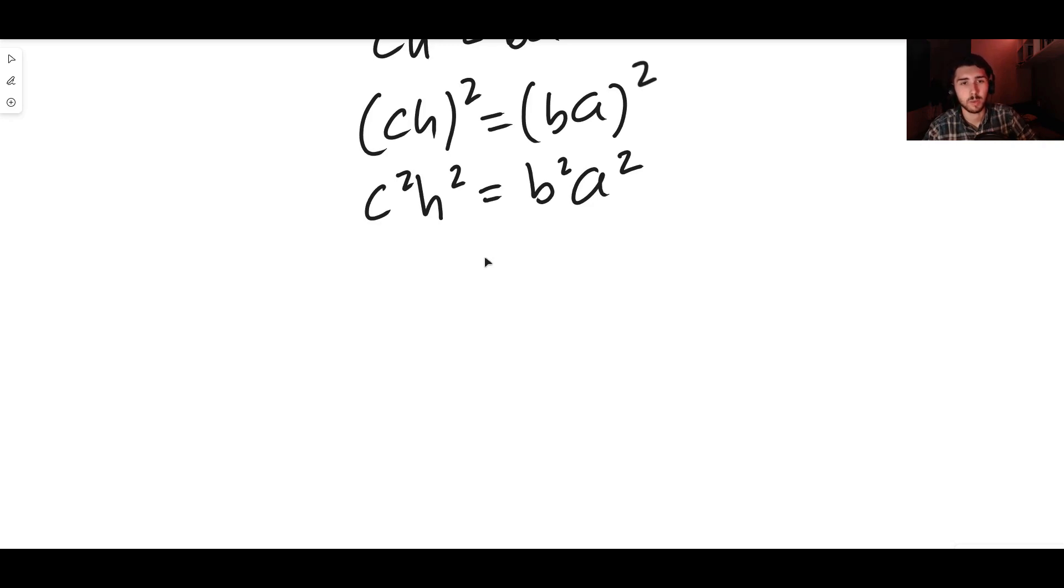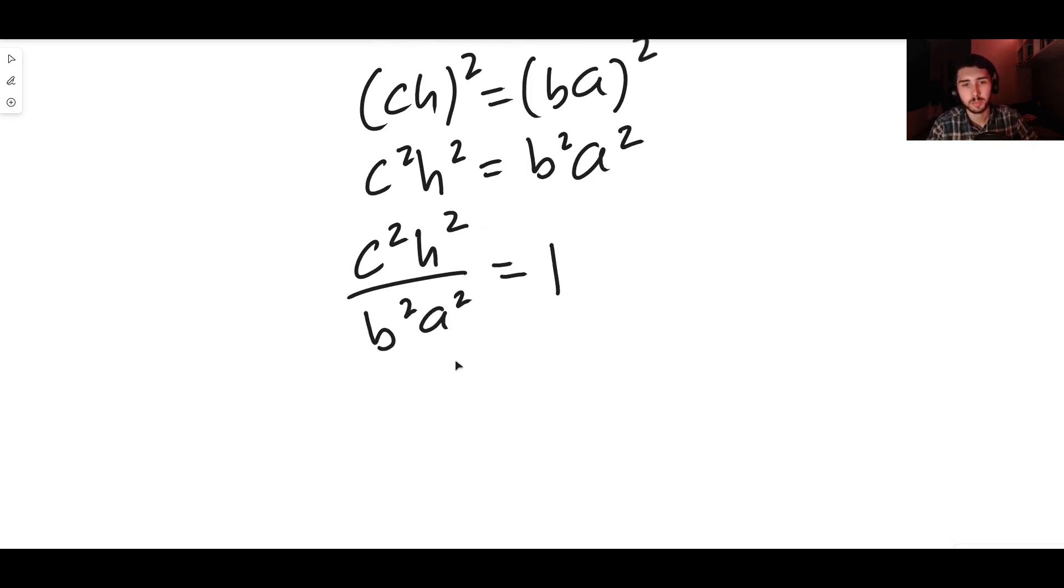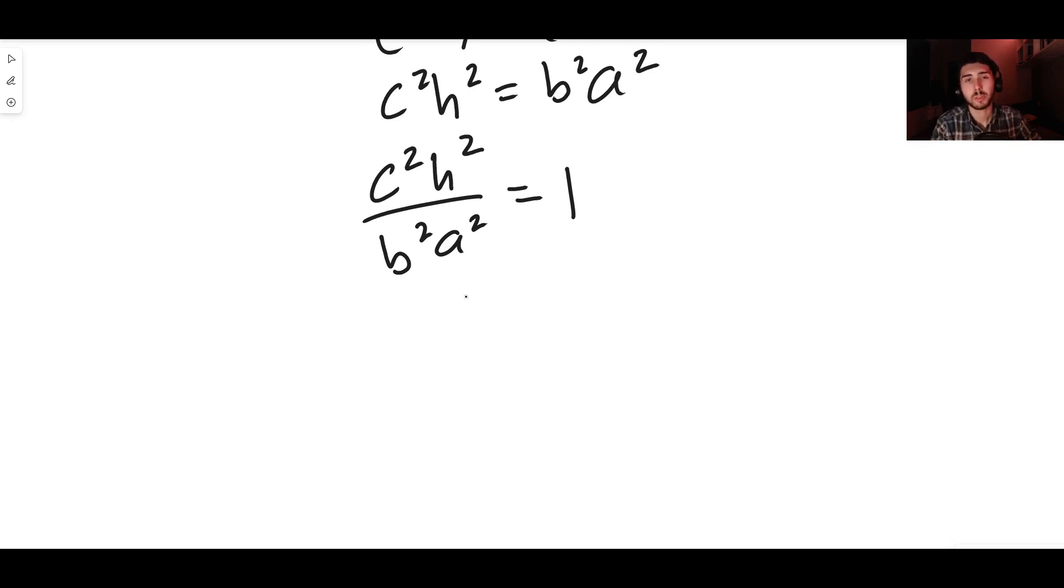Now we don't really want c to be in this situation. We can get rid of c. Before we get rid of c, I'm going to divide both sides by b squared times a squared, so I get c squared h squared divided by b squared a squared equals one.